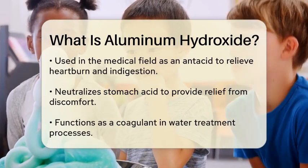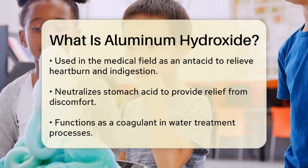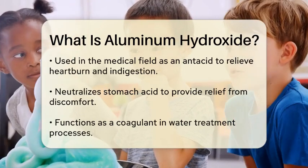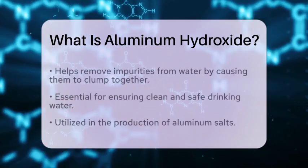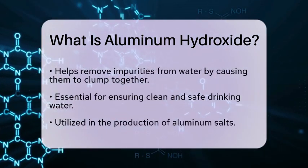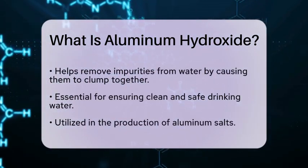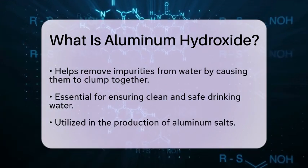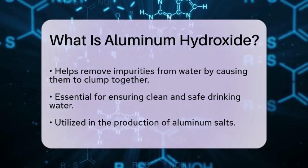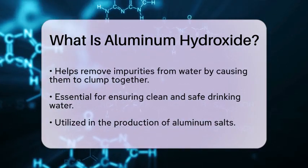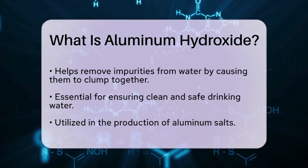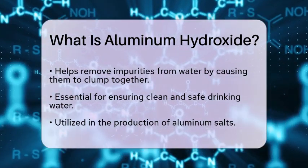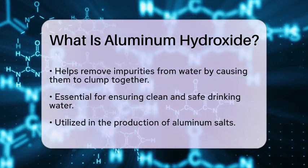In addition to its medicinal properties, Aluminum Hydroxide is also used in the water treatment process. It acts as a coagulant, helping to remove impurities from water by causing them to clump together and settle out of the solution. This makes it an essential component in ensuring clean and safe drinking water.